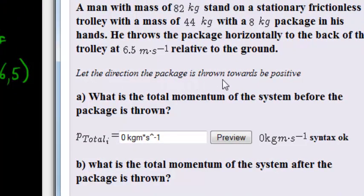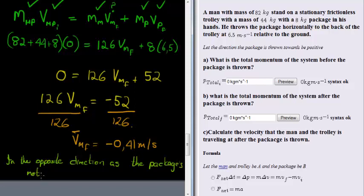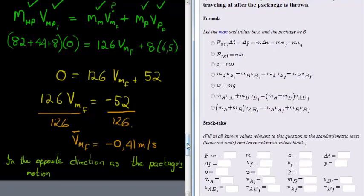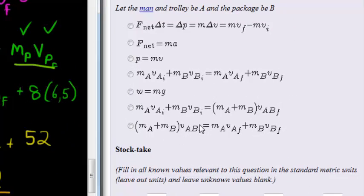When a vector is negative, it means it's in the opposite direction to what we originally chose as positive. We chose the direction the package is thrown as positive, so the man and trolley travel in the opposite direction to the package's motion. Because this is more like an explosion, we originally had one thing and then many things as the final state — that's the correct formula setup, with one initial velocity of zero and then separate final velocities.